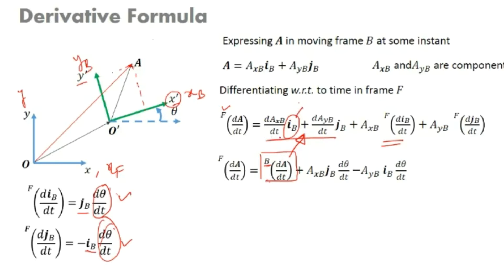So when we solve this, we get d A/dt in B frame plus AXB times JB times d theta/dt minus AYB times IB times d theta/dt. Taking d theta/dt common, this gives us the remaining cross product terms. d theta/dt can be written as omega, and the direction of omega must be specified.